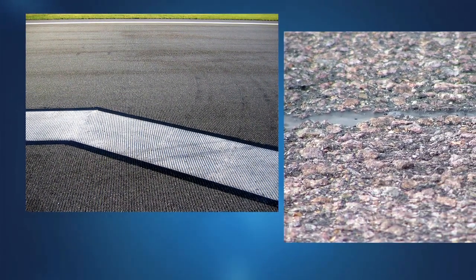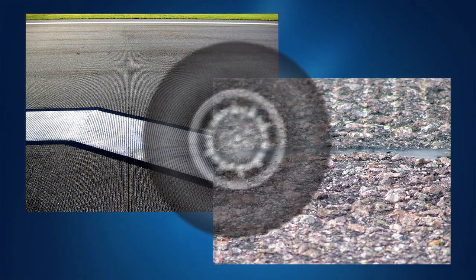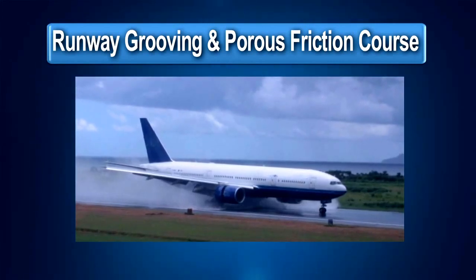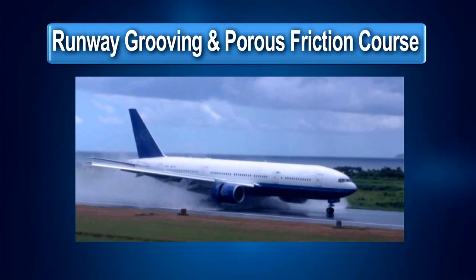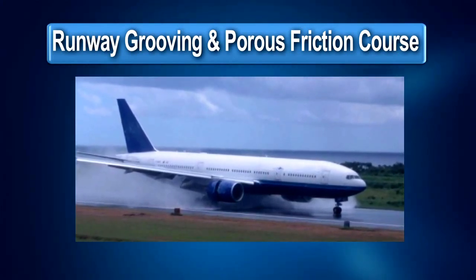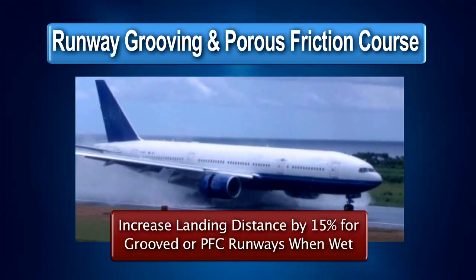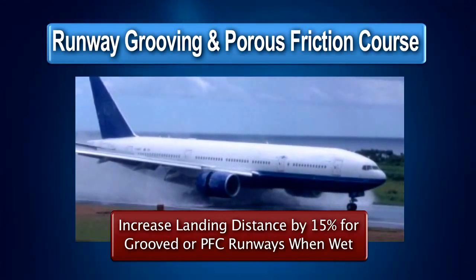Many runways used by transport category airplanes have skid-resistant surfaces, which may include runway grooving, porous friction course overlays, or a combination of both. Runway grooving and PFC surfaces allow water to escape from beneath the aircraft tires traveling at high speed, which reduces the threat of hydroplaning but does not eliminate it. These surfaces do not drain water from the runway, nor do they increase the friction capacity of the runway surface. A common misconception is that a grooved runway is considered to be dry for the purposes of applying the 15% increase when weather reports or forecasts indicate the runway may be wet or slippery at the time of arrival. Unless otherwise approved by the FAA, if the weather reports or forecasts indicate that the runway will not be dry at the time of landing, then the 15% increase to the factored landing distance must be applied.